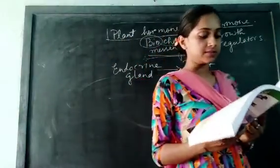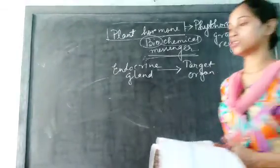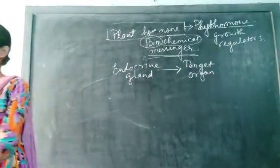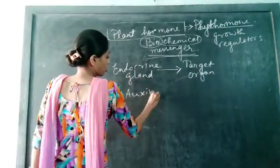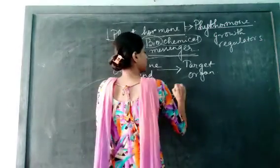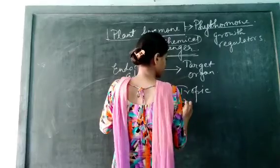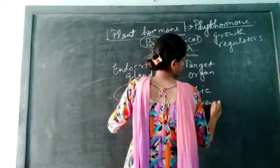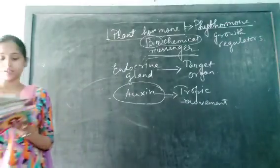Apart from this, phytohormones also play a significant role in the tropic movement. Now, which hormone plays this role? Auxin. In the first part, we have said that Auxin plays a significant role in tropic movement.